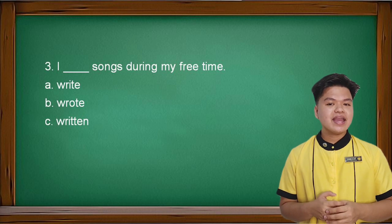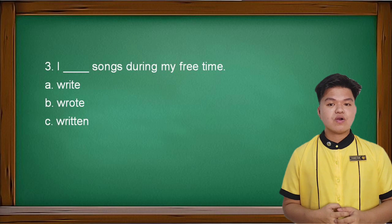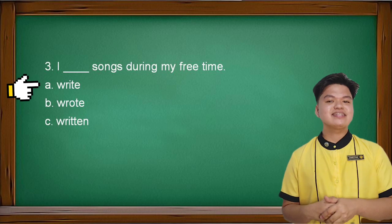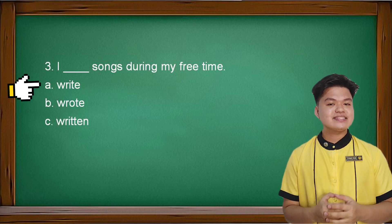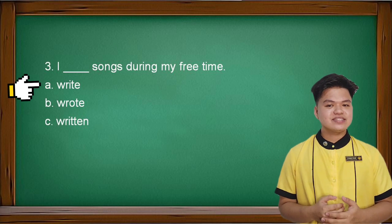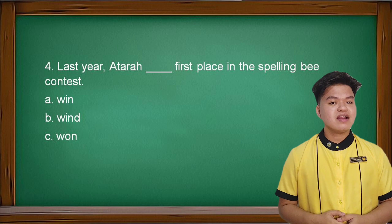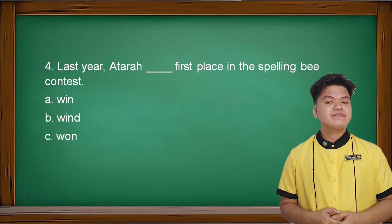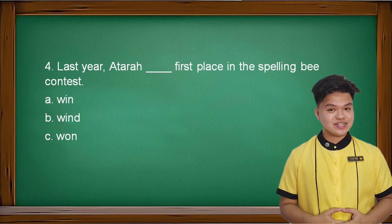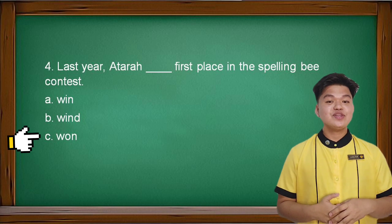Number three: I blank songs during my free time. A: write, B: wrote, or C: written. The answer is 'write' because it is in simple present tense — you can see the word 'during,' that's why it is happening. I write songs during my free time. Number four: last year, a Tara blank first place in the spelling bee contest. A: win, B: wins, or C: won. Correct! The answer is 'won' because it already happened last year.